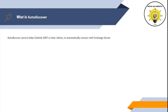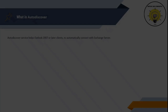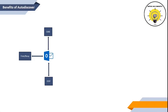Autodiscover is a Microsoft Exchange service which was introduced in Exchange Server 2007. It helps Outlook 2007 or later clients to automatically connect with Exchange Server. Autodiscover service is used by multiple features — Outlook client uses it for the offline address book, out of office service, and for free busy.